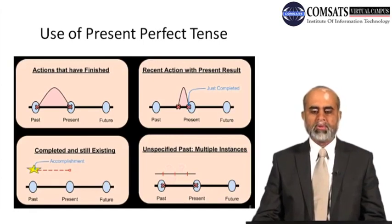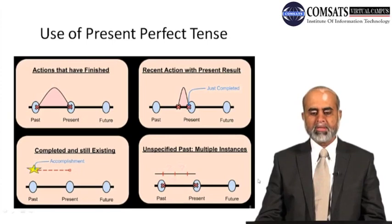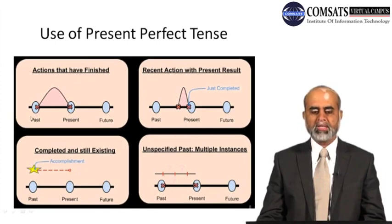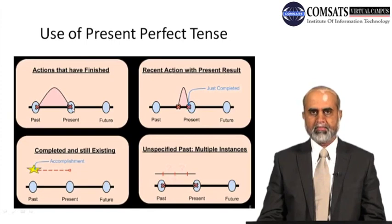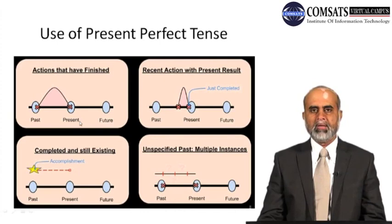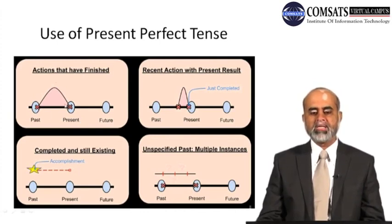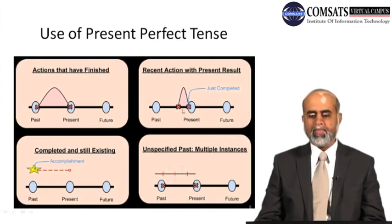Now let's look at the uses of present perfect tense. Present perfect tense is used with actions that have finished and actions that started in the past but whose result or connection is to the present. For example: 'I have come' — he started coming in the past but has finished now. Then there is the use for recent action with present result. Present perfect tense describes a past event that always has a connection with the present.